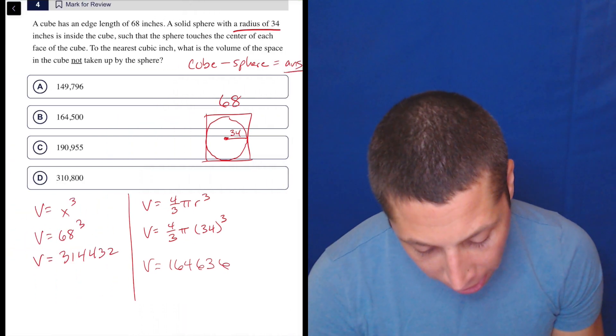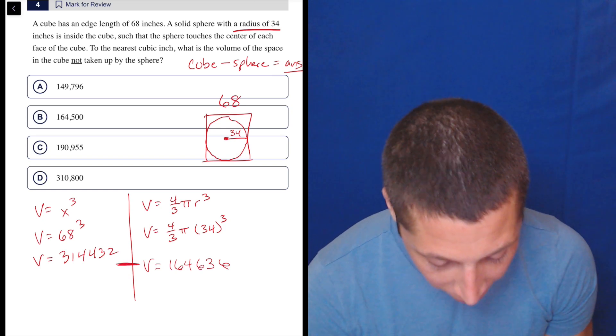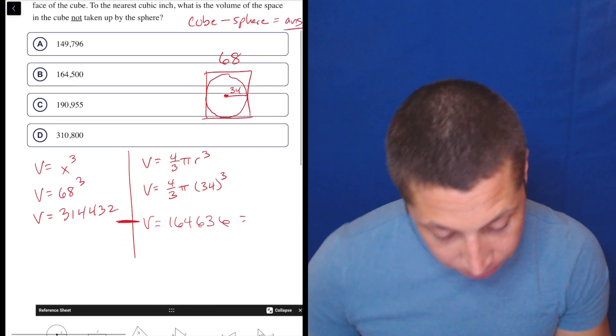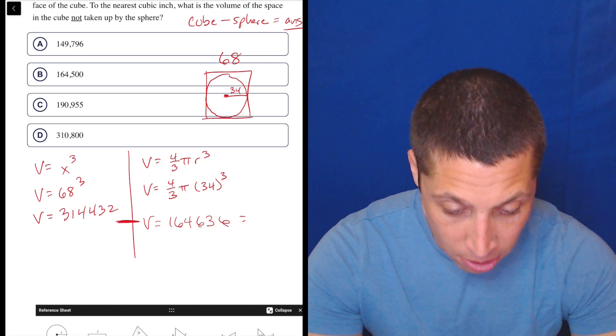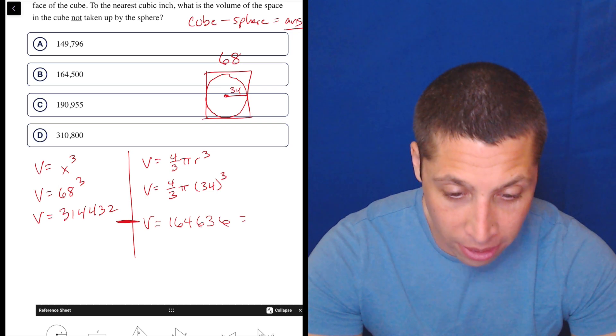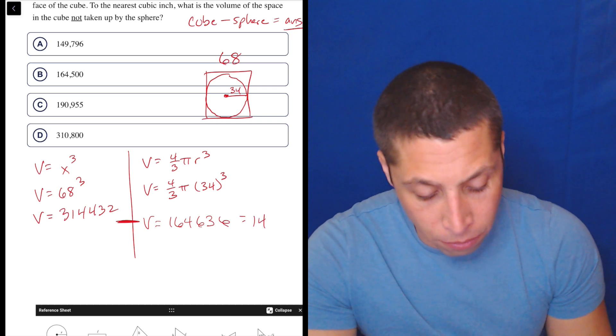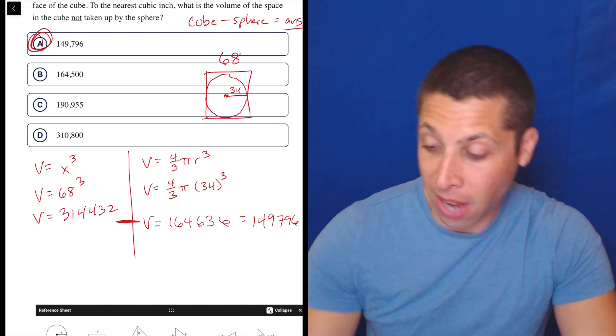So now I have the cube and I have the sphere. So we're going to do some subtraction here. And we get this one. I'm going to go back to the regular calculator. 314,432 minus 164,636 is 149,796. Answer A. Done.